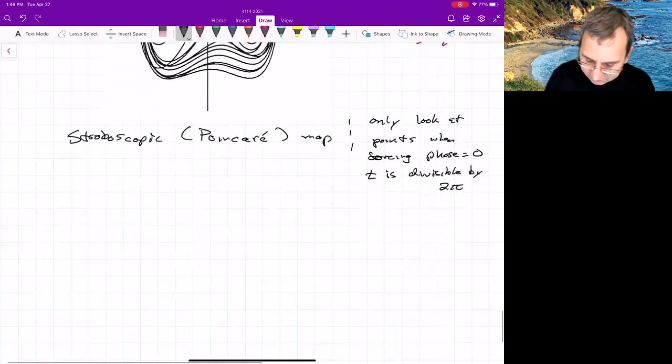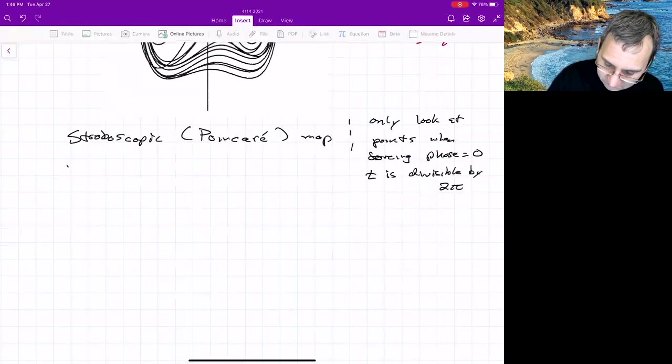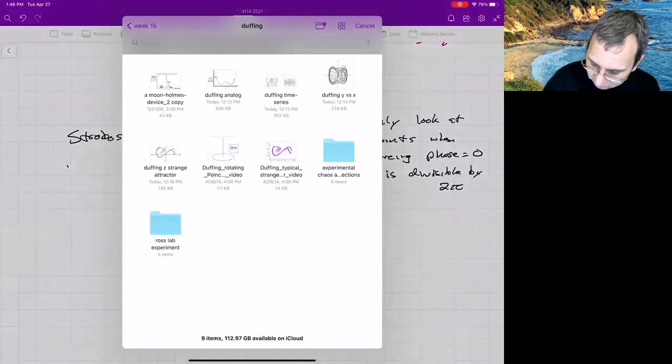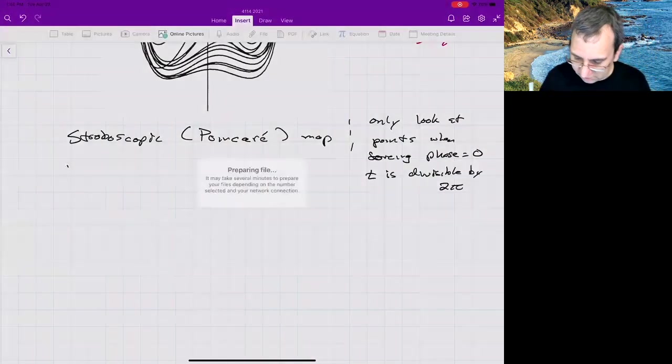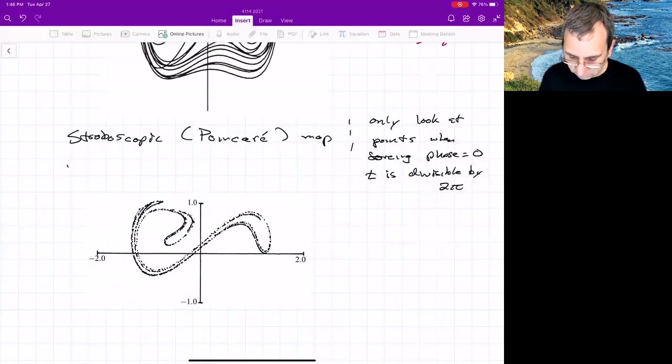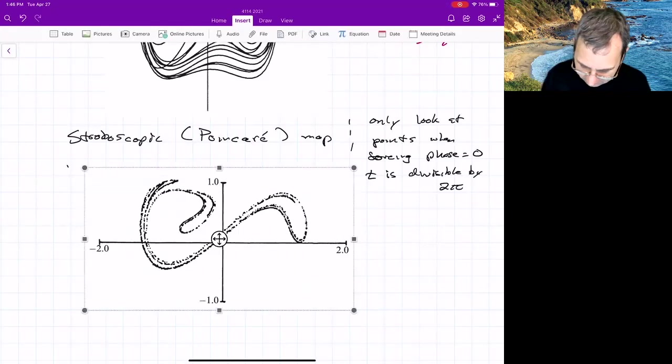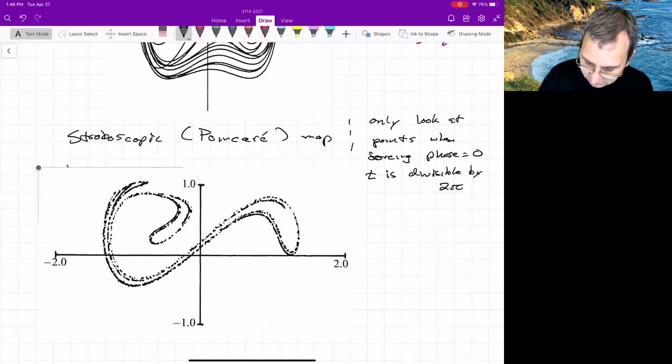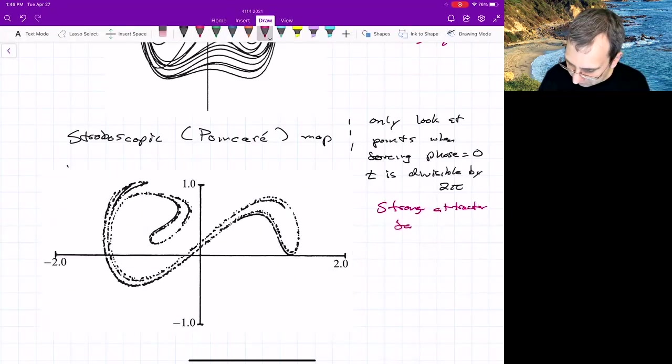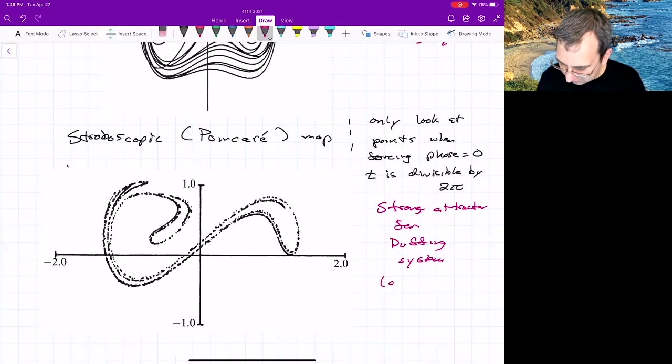So if we do that, then we see a pattern emerge that's really cool. We see a strange attractor. So this would be throwing out a bunch of initial points and only keeping what's there after a while. We get something like this. So this is the strange attractor for the duffing system. And this is just at phase equal to zero.